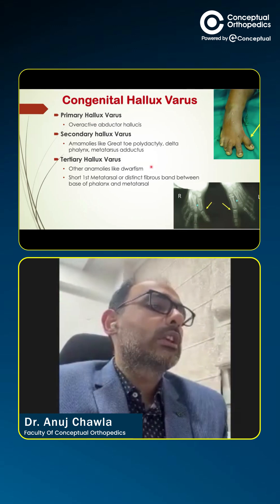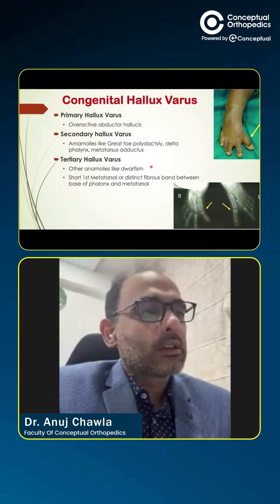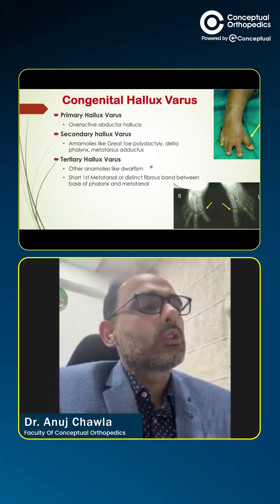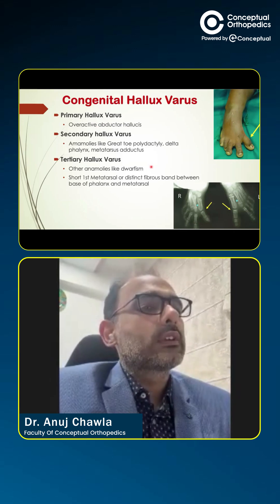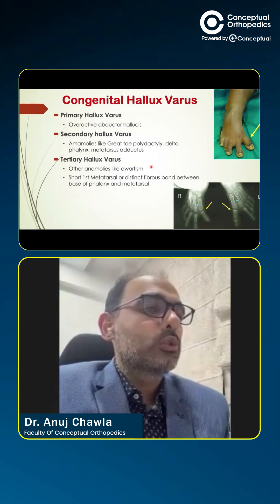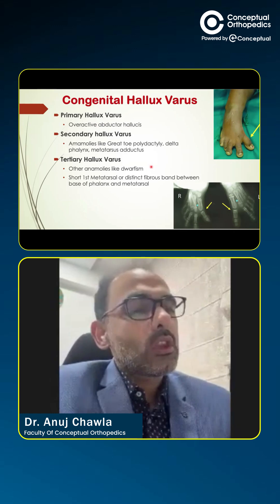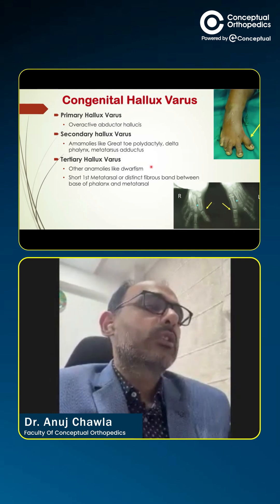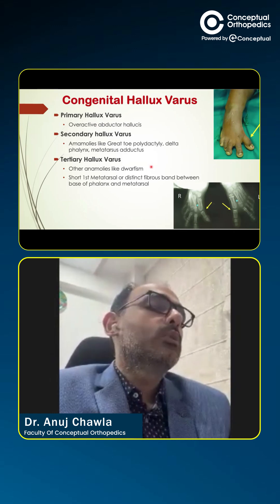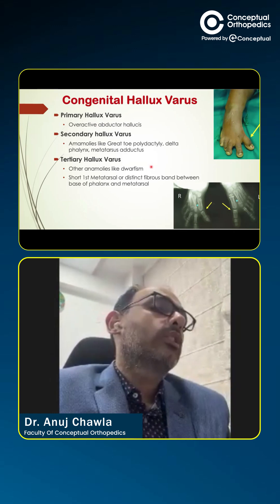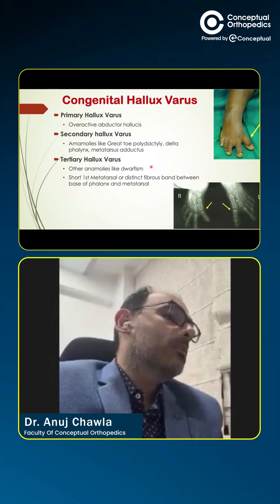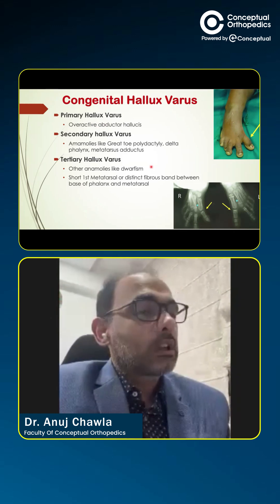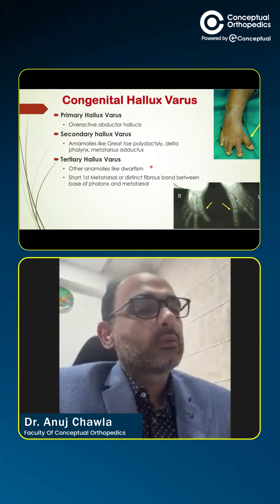which can be associated with various anomalies like polydactyly of the great toe, or a delta phalanx in which the phalanx is divided into two. A primary metatarsus adductus can also lead to secondary hallux varus, though primary metatarsus adductus can generally lead to a hallux valgus.